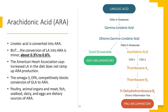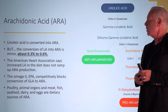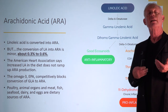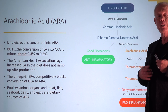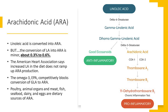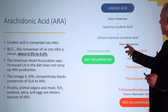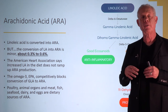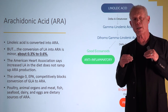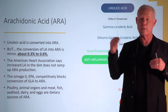Arachidonic acid (ARA) — we make it from linoleic acid, but it's extremely inefficient, about 0.3 to 0.6 percent at most. We do get arachidonic acid in our diet primarily from meat, eggs, poultry, fish, and cheese. There's a rate-limiting step involving delta-6 and delta-5 desaturase enzymes, and it works competitively with the omega-3s — they both go to the same enzymes. So if you have more of one, less of the other gets converted.